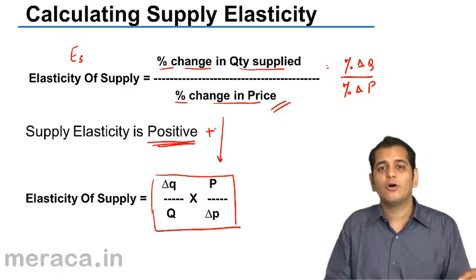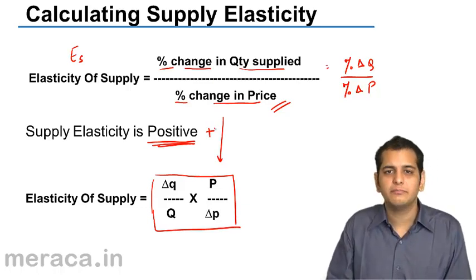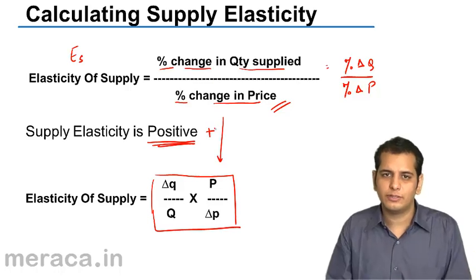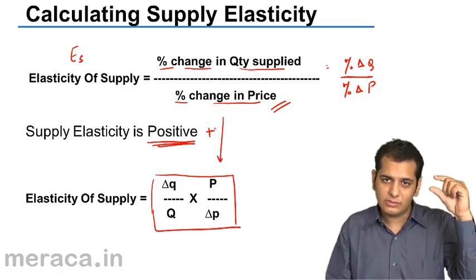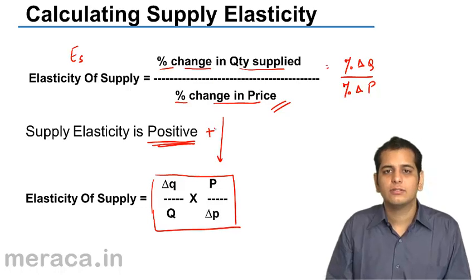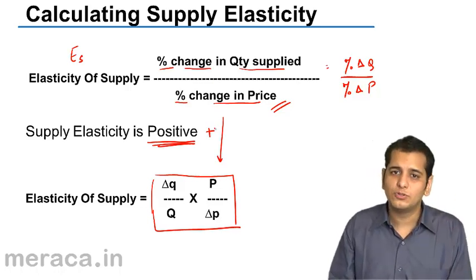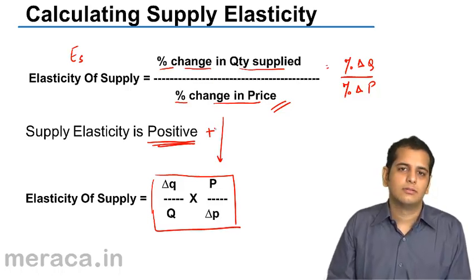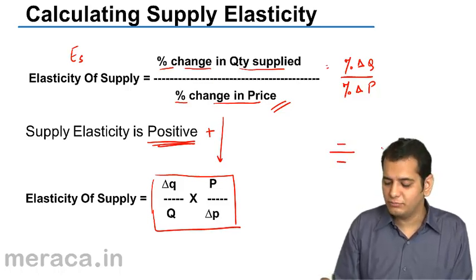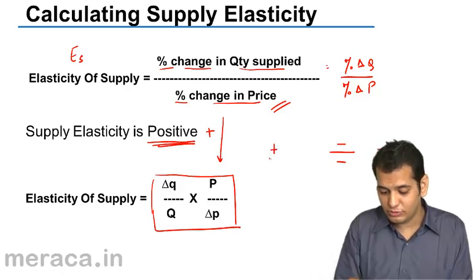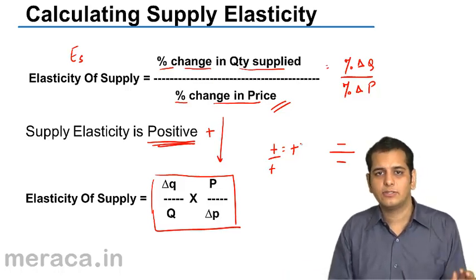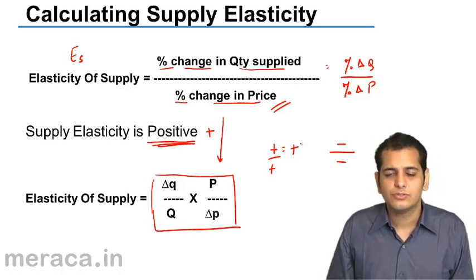Why is it positive? Because there exists a direct relation between price and supply. As price increases, supply also increases; as price decreases, supply also decreases. So when price decreases, there is a negative change in price, and quantity supplied also decreases, giving a negative change in quantity. Negative divided by negative becomes positive, and positive divided by positive is always positive. So in either case, the answer of elasticity of supply is positive.